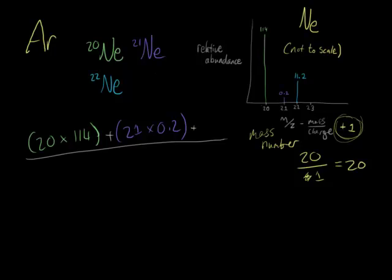We divide this by the total of the relative abundances, so what we need to do now is find the total for these relative abundances.